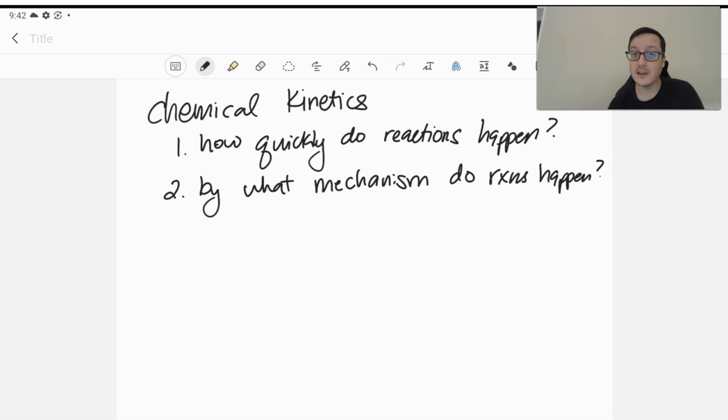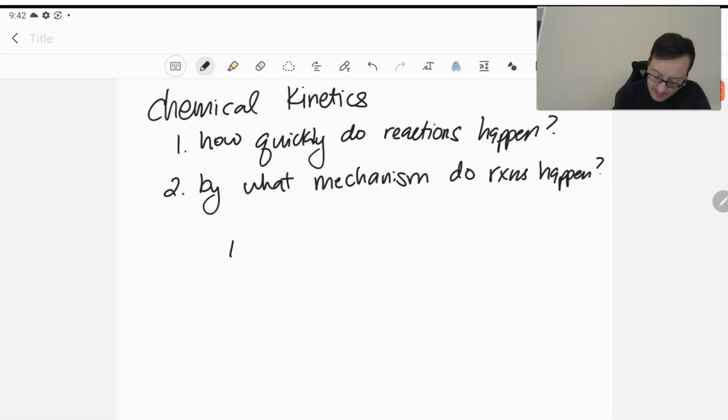And so this chapter is heavily experimental. So we're going to be working a lot with data. And so when we think about kinetics and how things are happening, we can think of a simple reaction. We can say compound A is turning into compound B over the course of our reaction. And we can evaluate the rate of a reaction by looking at either concentration of A or concentration of B.